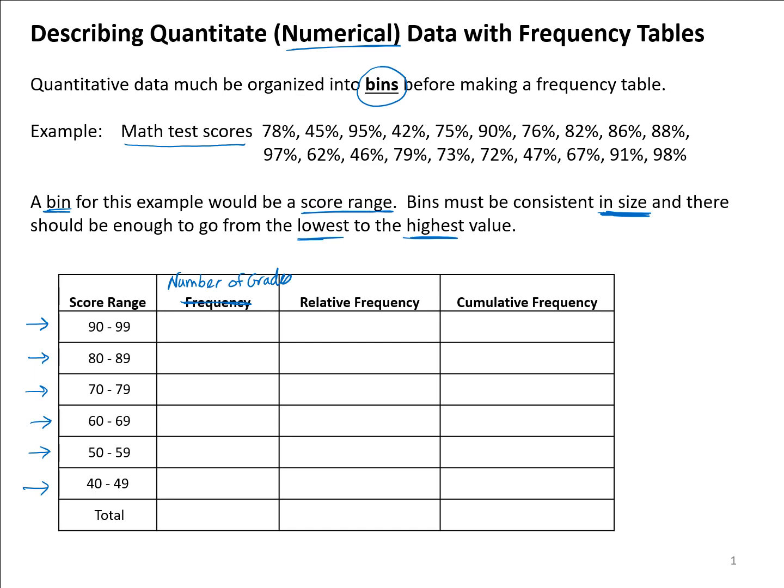I highlighted some of the categories here. I highlighted the A's, the scores that were between 90 and 99 in yellow, and there were five of those grades. Grades that were between 80 and 89, there were three, highlighted those in green. 70 to 79, there were six. 60 to 69, there were two. There were no grades between 50 and 59, and that is something we should show because we have to be consistent with our ranges until we get to the lowest value.